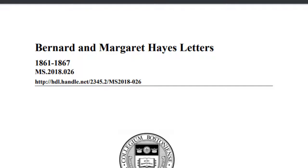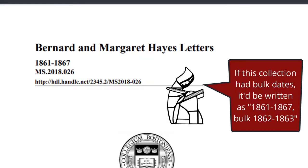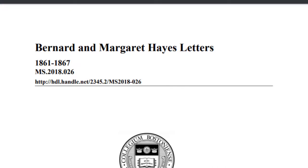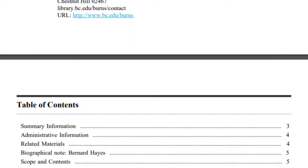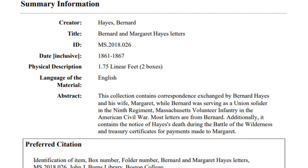Many finding aids will have front matter, where you can find a lot of useful information that provides context for the overall collection. The title page includes the title of the collection and the inclusive dates, which is the total range from the oldest to the newest document in the collection. Some collections also have bulk dates — the range of years where the majority of the collection is from. The title page also includes a unique identifier for the collection, a permanent link to the document, which repository this is from, and contact information for that repository. After the table of contents is the summary information.